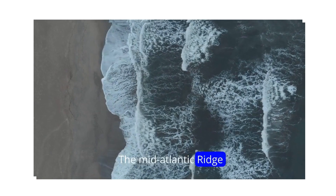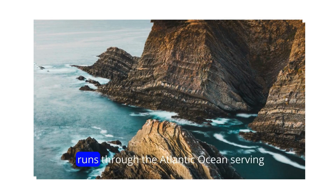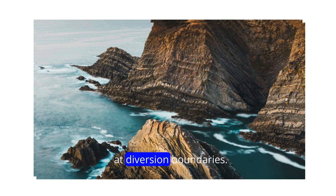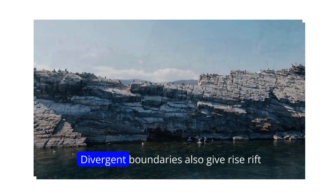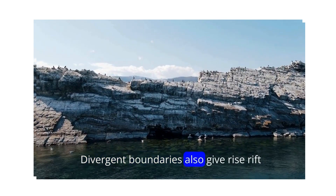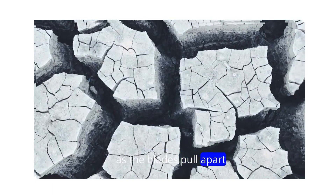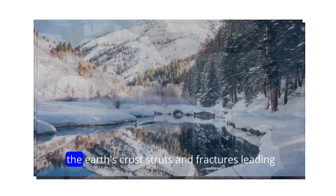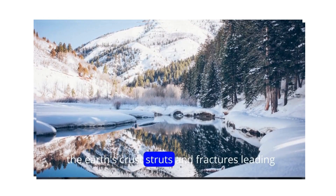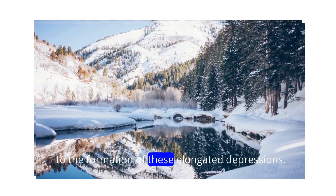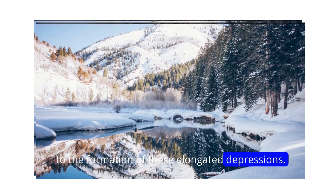The Mid-Atlantic Ridge runs through the Atlantic Ocean, serving as a prominent example of the geological activity at divergent boundaries. Divergent boundaries also give rise to rift valleys. As the plates pull apart, the earth's crust stretches and fractures, leading to the formation of these elongated depressions.